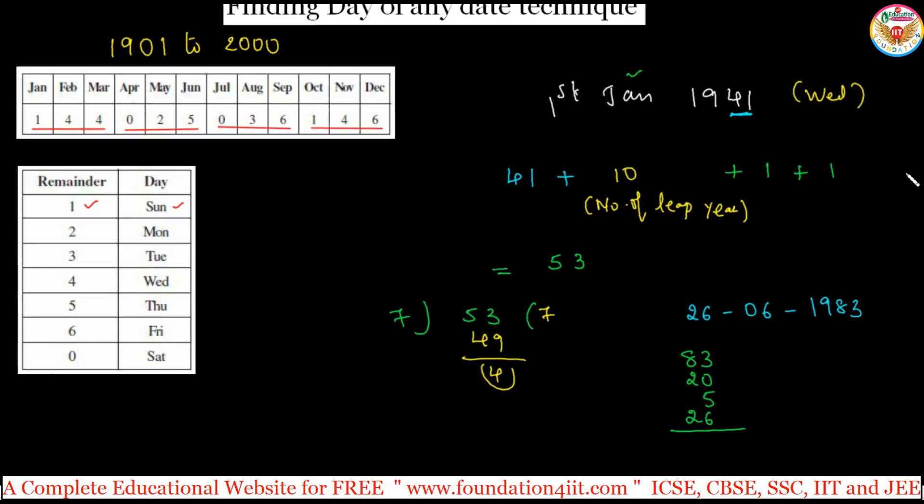Just add these numbers: 8 plus 6 is 14, carry 1, so 134. Then take 134 divided by 7. Based on the remainder, 7 times 19 is 133, remainder is 1.